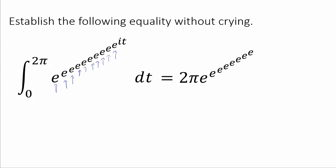And how many e's on the right side? 1, 2, 3, 4, 5, 6, 7, 8. So we are going from 10 e's to 8 e's. I guess that's interesting, but that's not helping us too much.